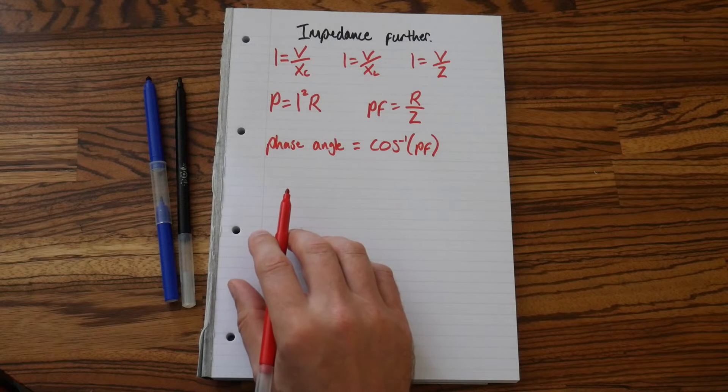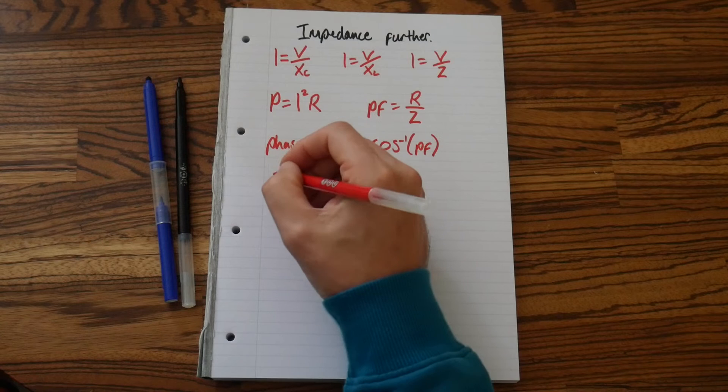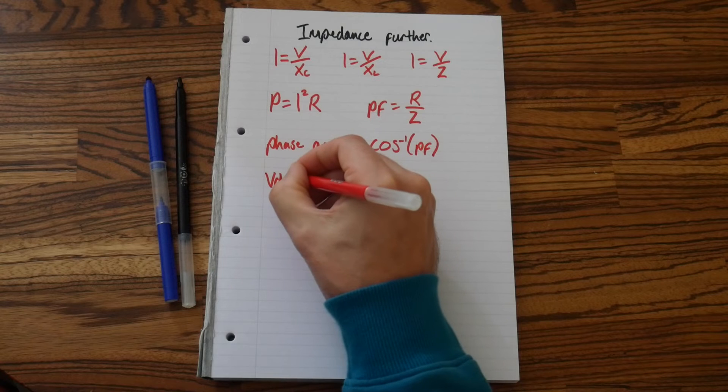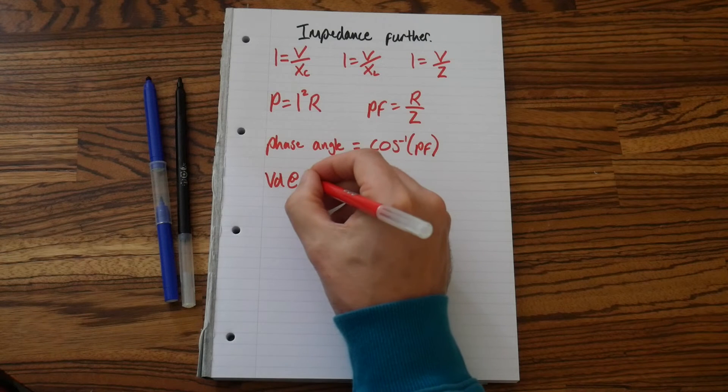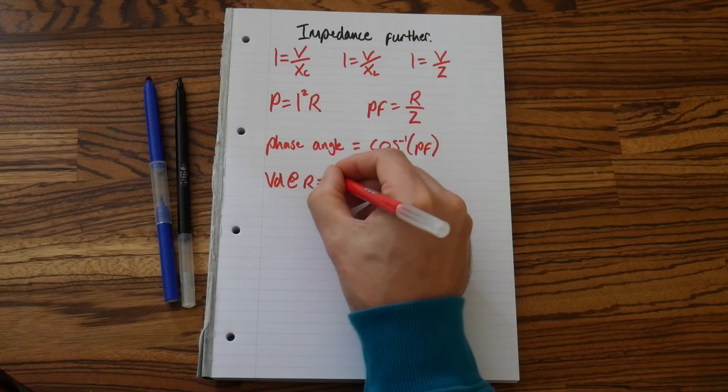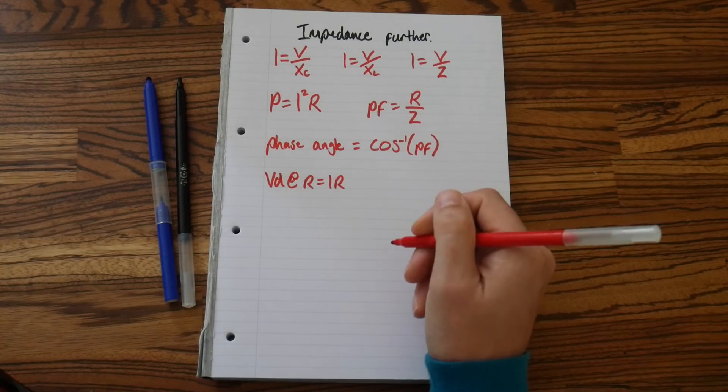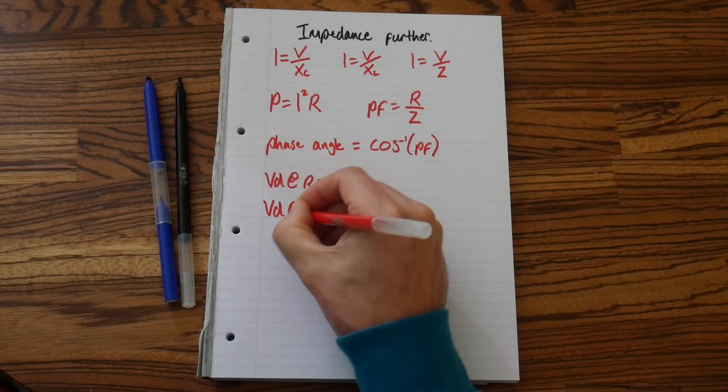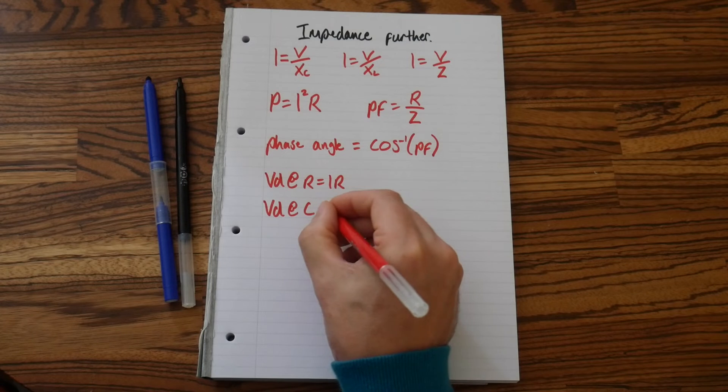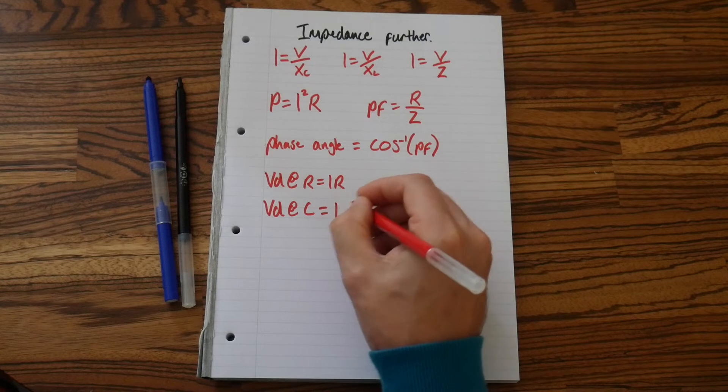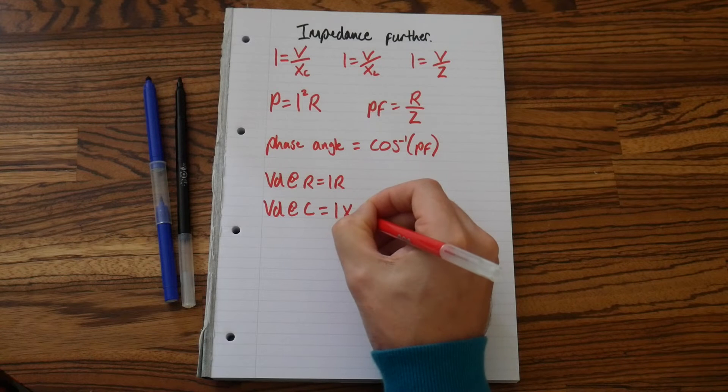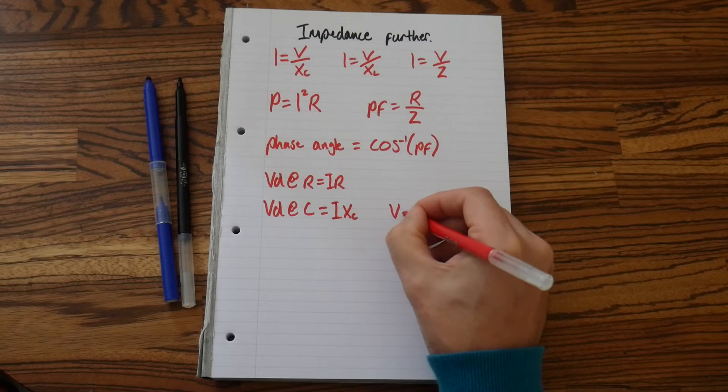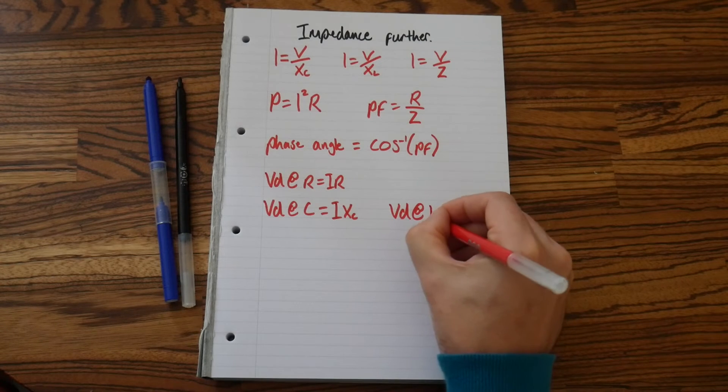We now can work out the volt drop. So I'm going to call this VD, volt drop. Volt drop at R, the resistor, equals IR. We then have a volt drop at a capacitor equals I times XC, and then we have a volt drop at an inductor.